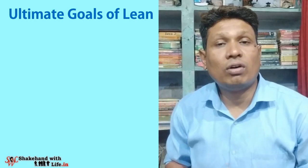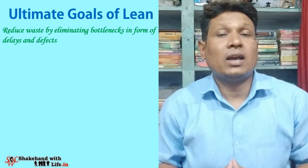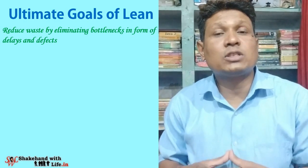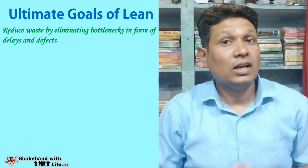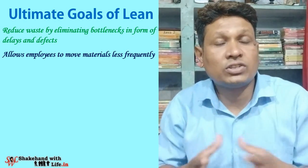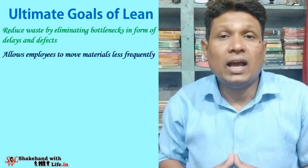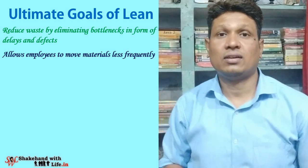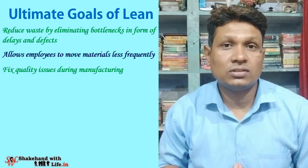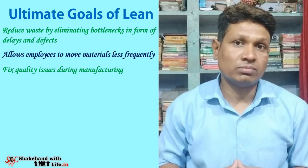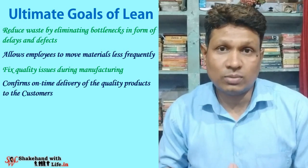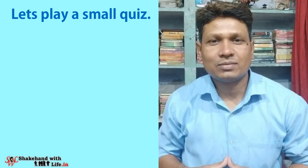The ultimate goal of lean management is to reduce waste by eliminating bottlenecks in the form of delays and defects, and improving the speed of the production system and product quality. Lean management allows employees to move materials less frequently, resulting in improved quality and less inventory. Fixing quality issues during manufacturing saves both time and resources, increases efficiency, and confirms on-time delivery of quality products to customers.